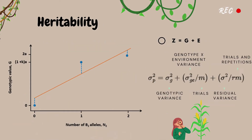Let's remember some concepts seen in the first video. In this graph we have the representation of the genotypic value, where the regression line represents the genotypic effect of the locus as a function of the number of copies of the dominant allele. The phenotype of an individual — that is, what we can observe — is the result of a set of components that can be divided into genetic and environmental. As seen in the last video, an individual's phenotype is equal to the genotype plus the environment effect. Through experiments it is possible to estimate the phenotypic variance and, from this, the genotypic variance and environmental variance as well.